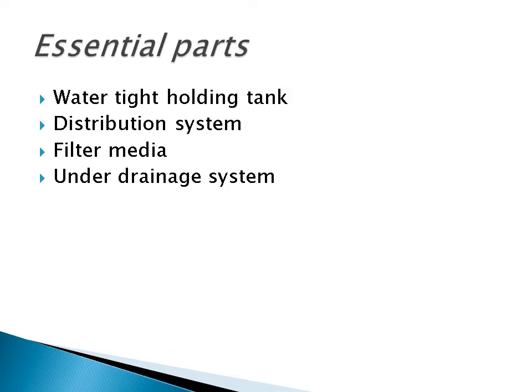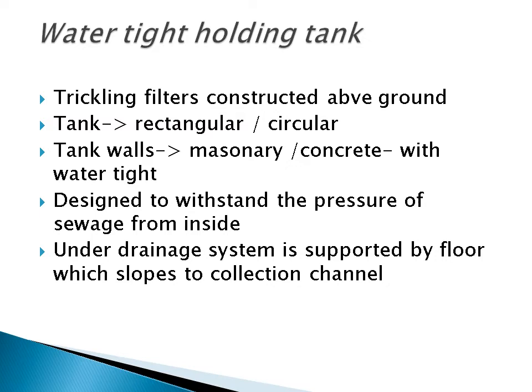The essential parts of the trickling filter are: a water-tight holding tank, distribution system, filter media, and the under drain. Trickling filters are normally constructed above ground. The tank can be rectangular or circular — normally we provide a circular trickling filter. The tank can be constructed either in masonry or concrete, and is water-tight, designed to withstand the pressure of sewage from inside. The under drain system is supported by the floor and is provided throughout the floor of the trickling filter, with a slope provided for collection.